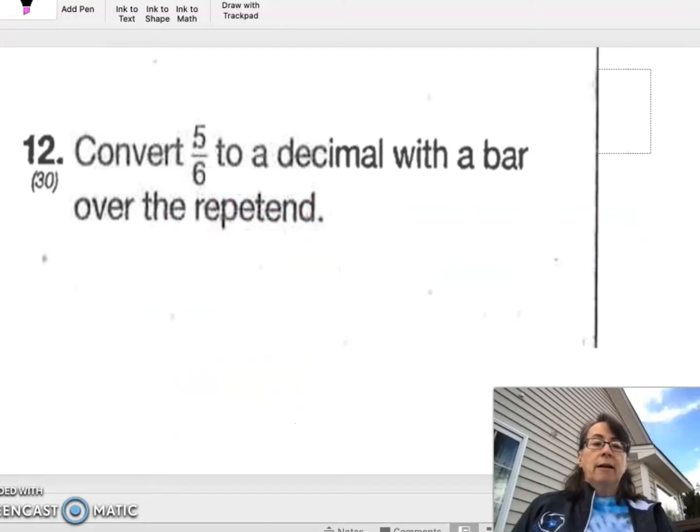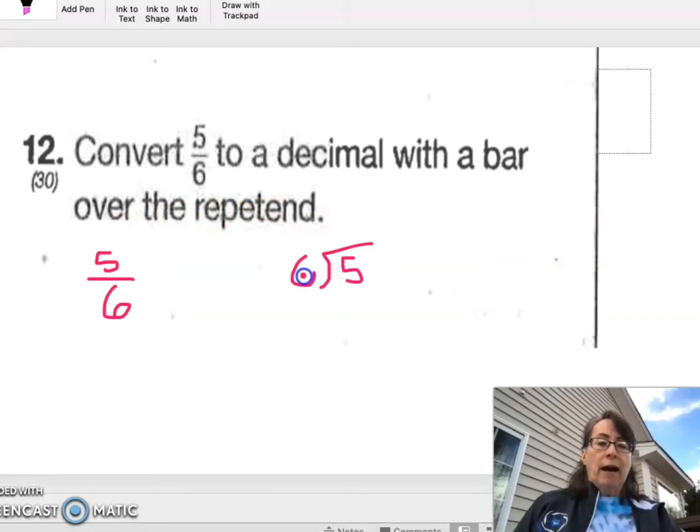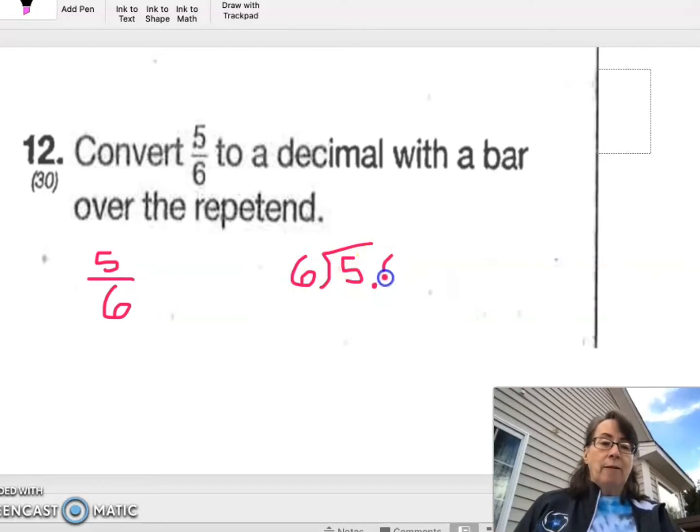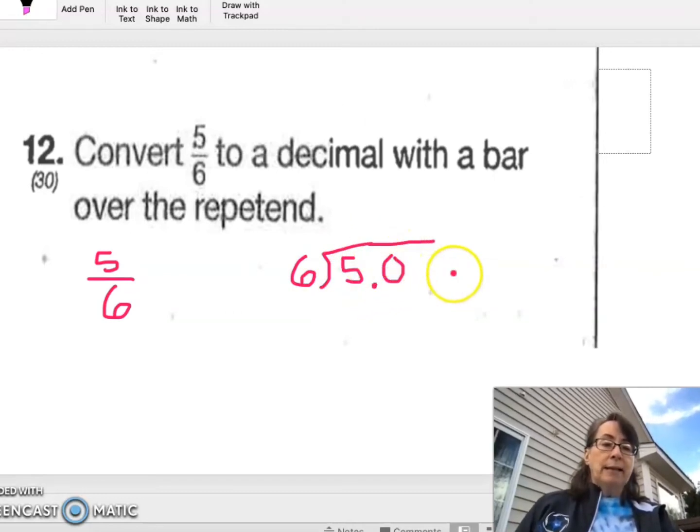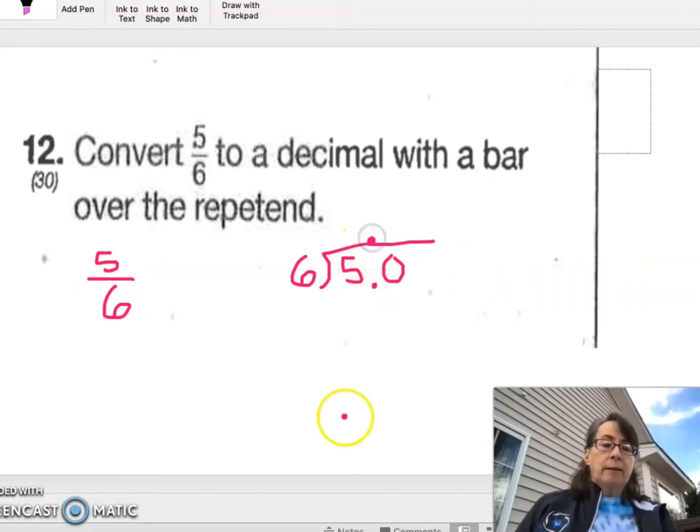Number 12. Convert 5 sixths to a decimal with a bar over the repetend. So to convert a fraction to a decimal, we do a simple division. 5 divided by 6. Since 6 does not go into 5, we're going to go ahead and put a decimal and a 0 and our decimal will go right above.